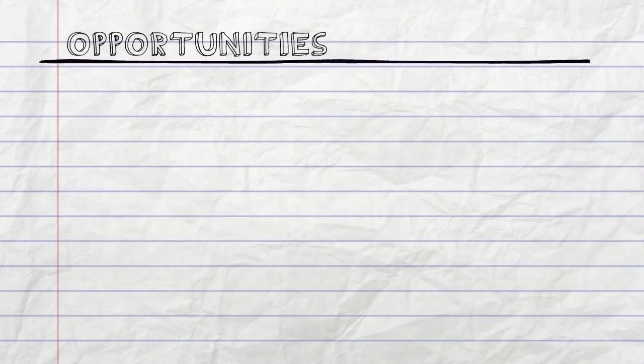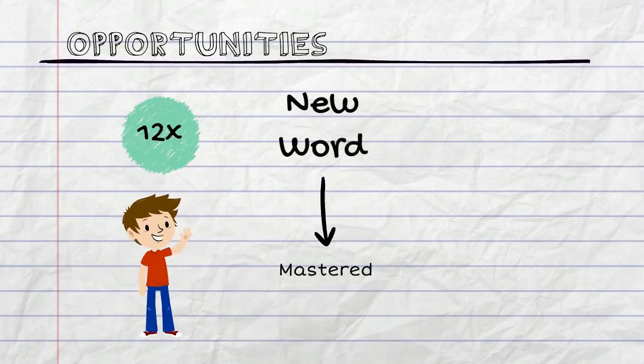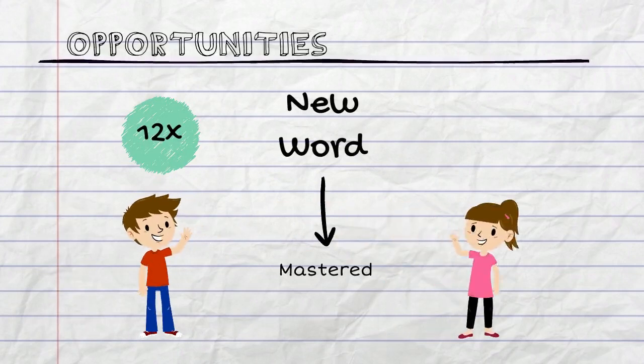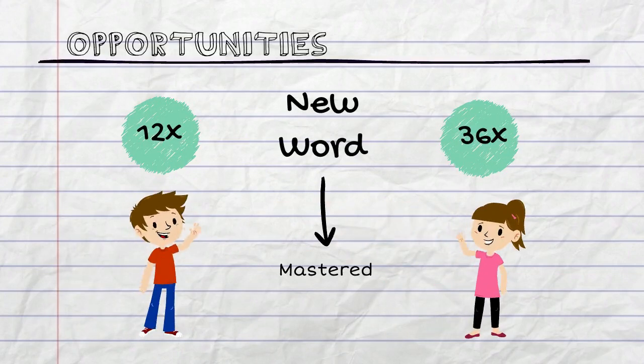A typically developing child needs to be exposed to a new word a dozen times to master it. Children who have a language or learning disability need to be exposed to a new word 36 times to understand and use it.